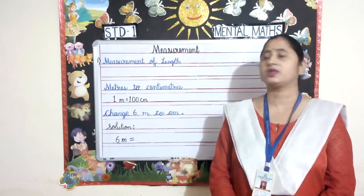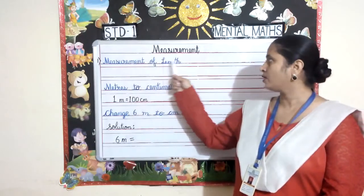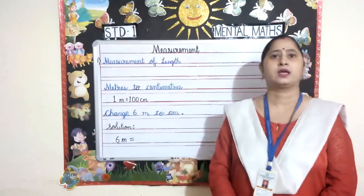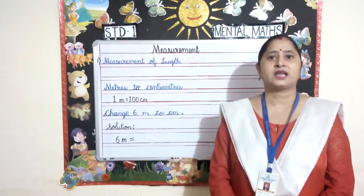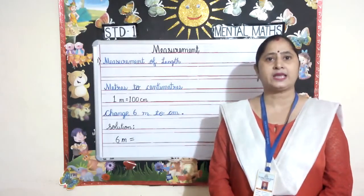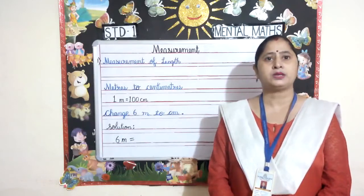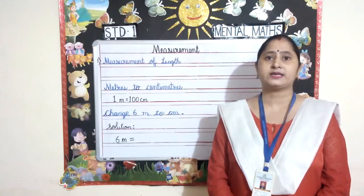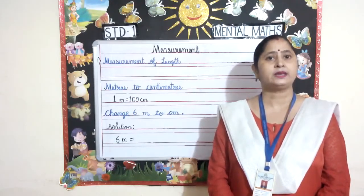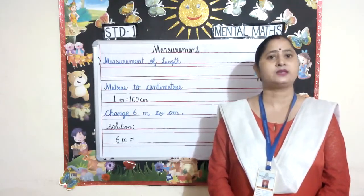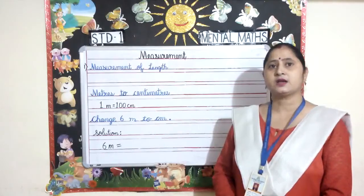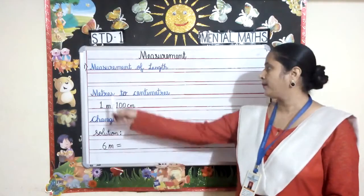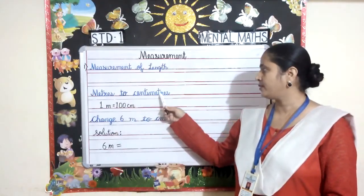Let's start with the first topic, measurement of length. The standard unit of measuring length is meter. Long distances are measured in kilometers. Small distances are measured in centimeters. Let's convert meters to centimeters.